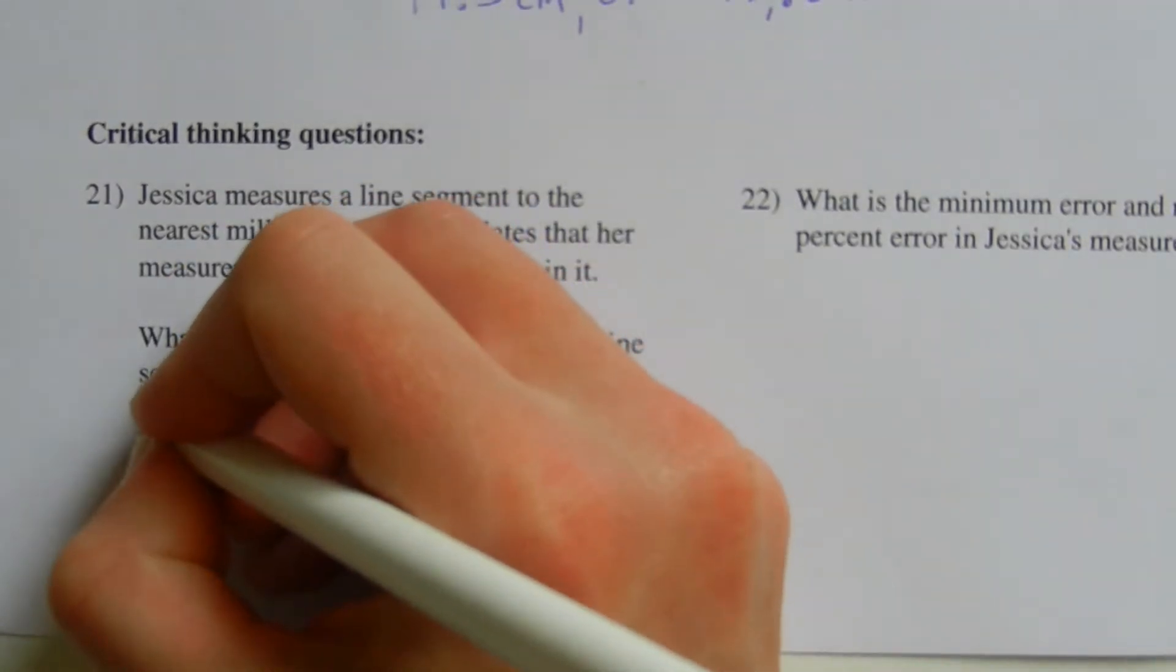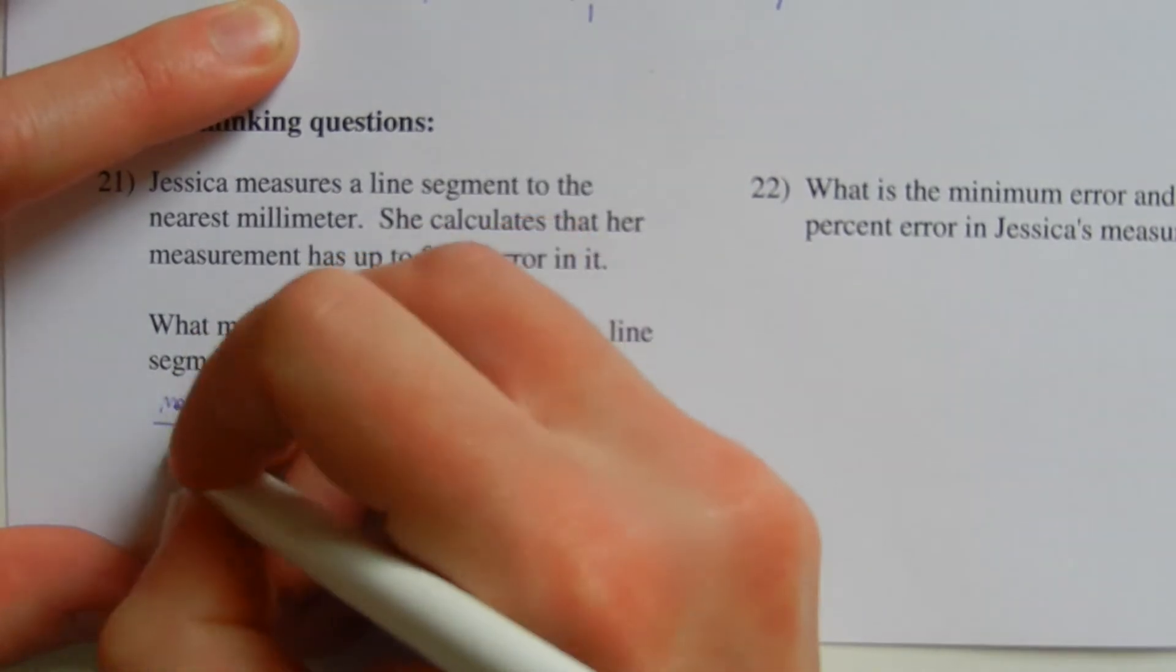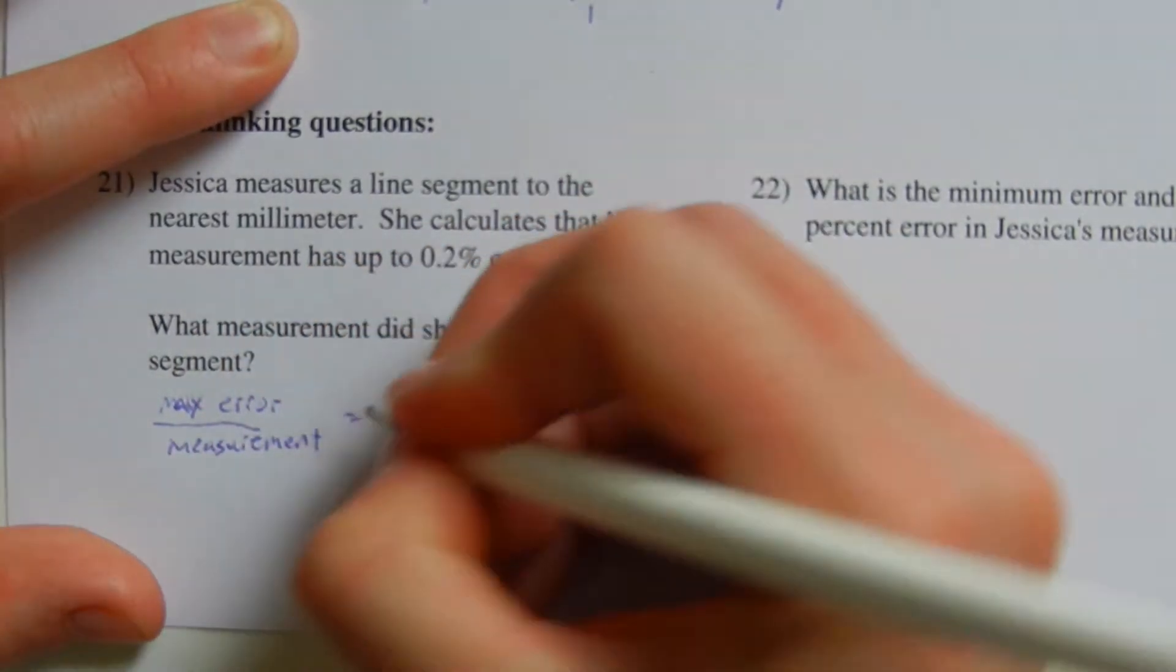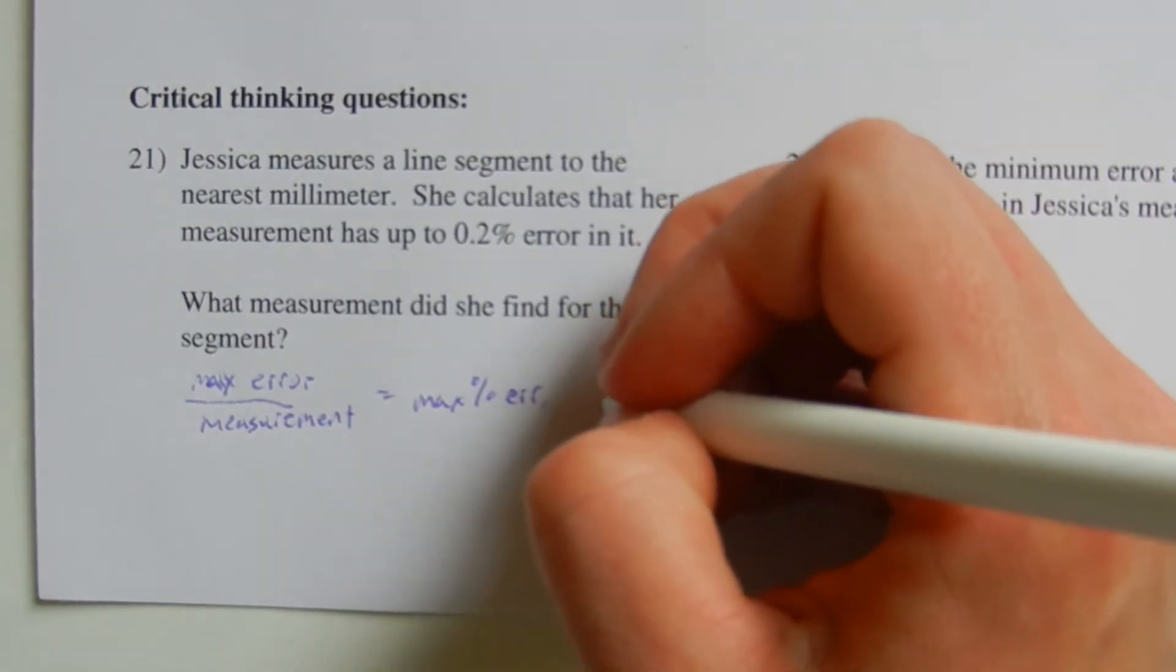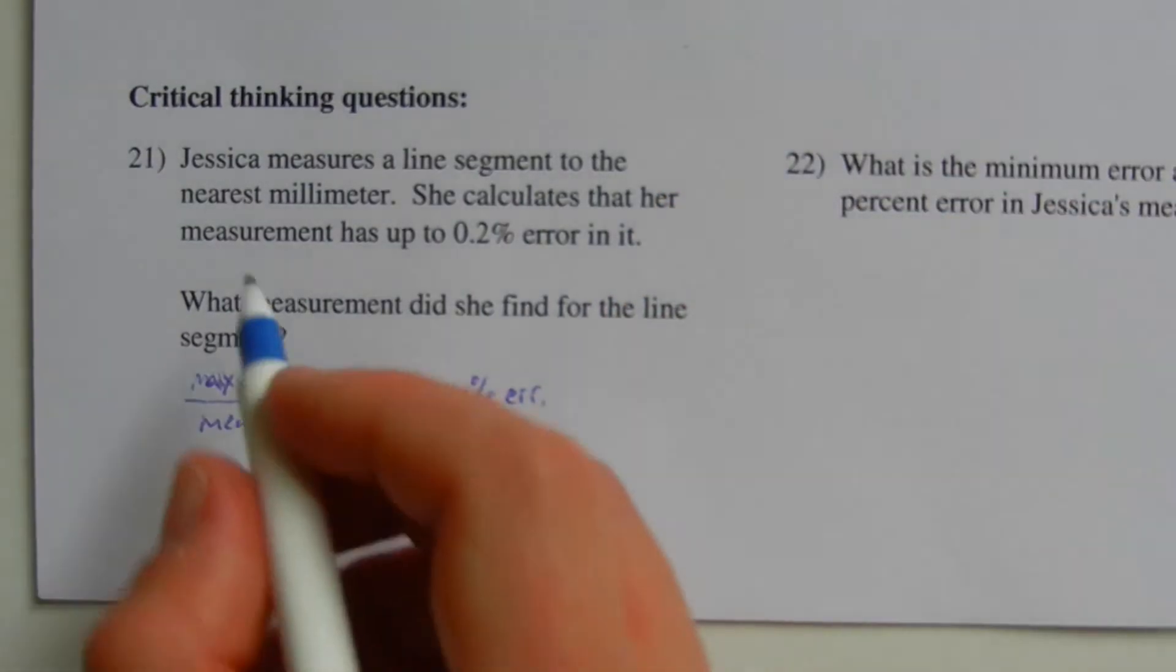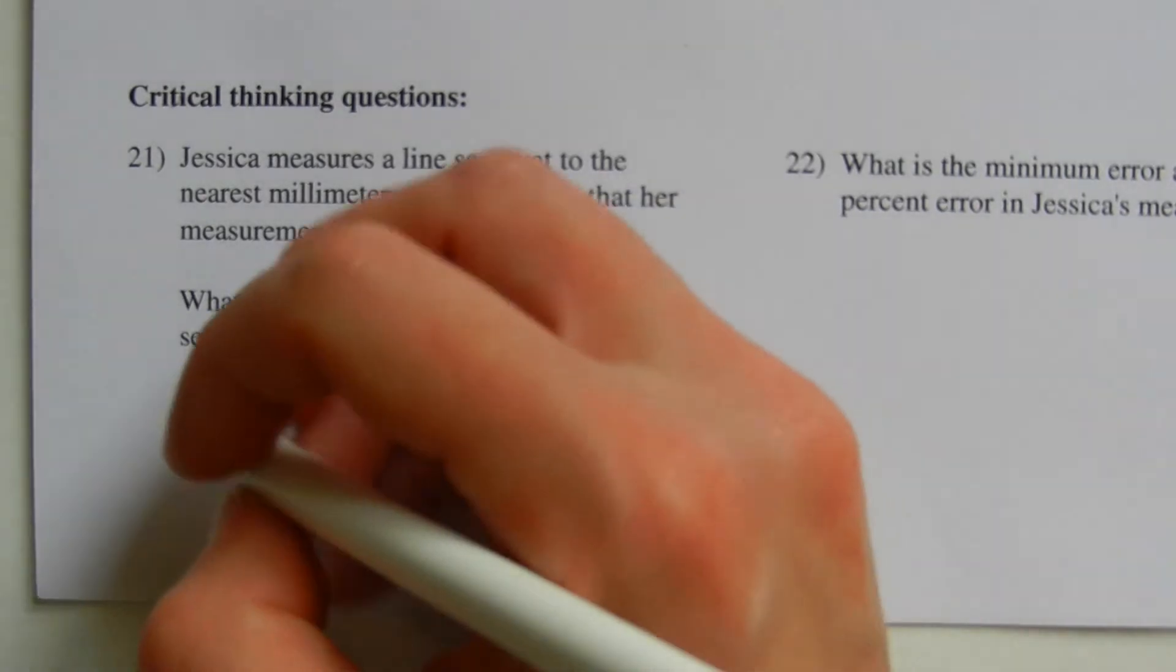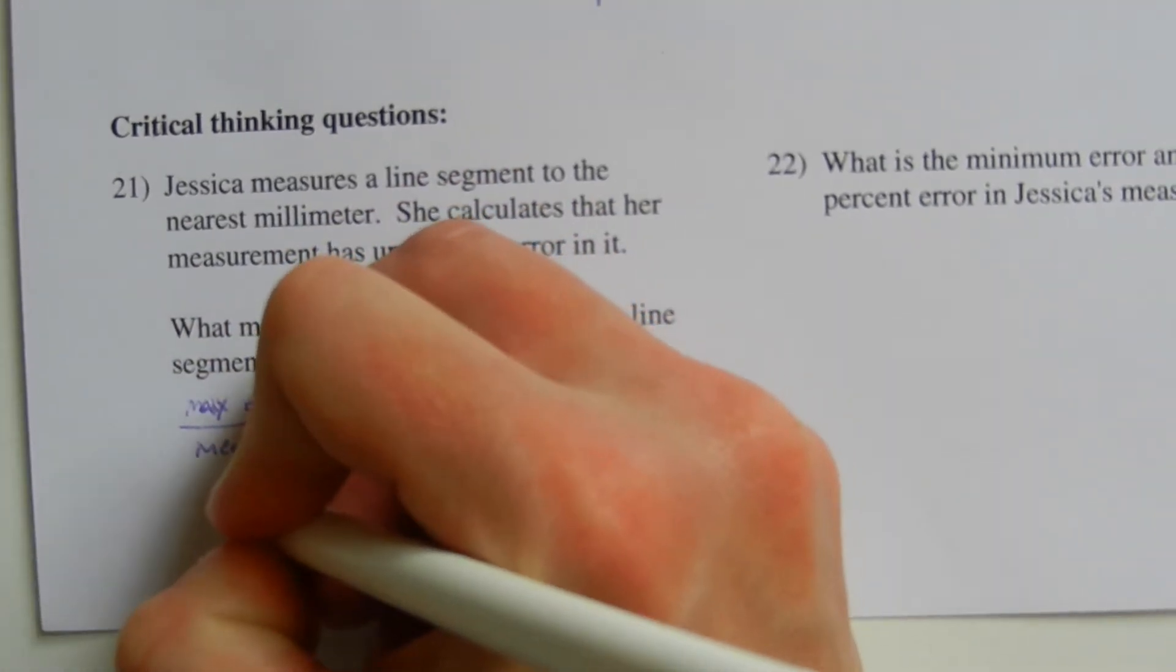So we know that our max error divided by our measurement equals the max percent of error. So let's plug in what we know into this formula. Now, our max error, since she's rounding to the nearest millimeter, is 0.05.